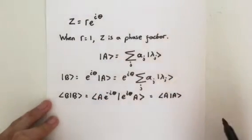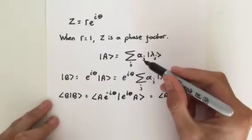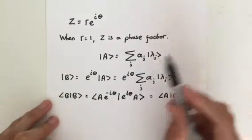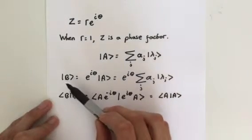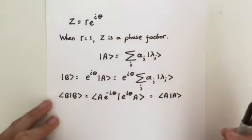The same pattern of cancellation preserves other quantities as well. For example, a's probability amplitude, a j, becomes e to the i theta a j, because we're multiplying it, and that's going to be for b. You can see the probability amplitude is different. However, it's the actual probability, not the amplitude, that has physical meaning.